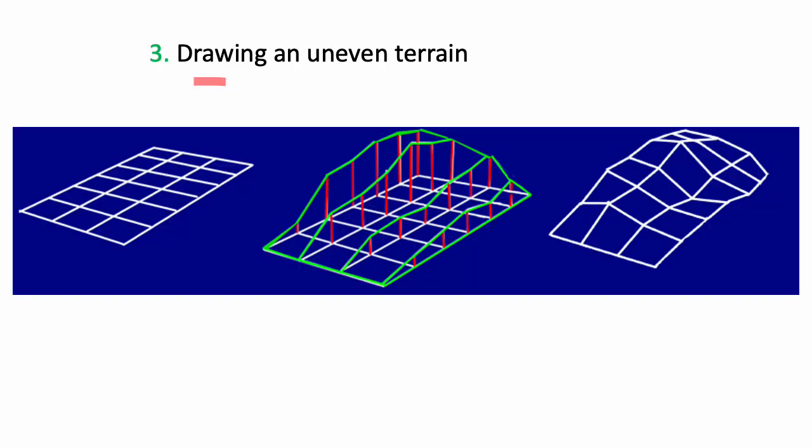So an unusual way to use a grid is to draw an uneven terrain. So here we have our grid that we've previously learned how to draw. Then put vertical posts where you want the terrain to be higher and connect that with green lines. And then get rid of your construction lines and you end up with this, which is a drawing that looks more realistic than probably something you could do freehand.